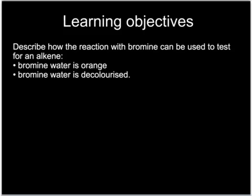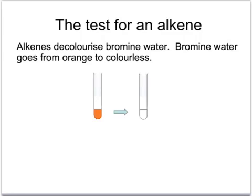This describes a simple chemical test you would do to distinguish an alkane from an alkene. You take a sample, you add some bromine water, give it a good shake and then have a look at it afterwards. Alkenes will decolourise bromine water — bromine water starts off orange, but when it's shaken with an alkene it will turn colourless. Alkanes have no such reaction and they remain an orange colour.